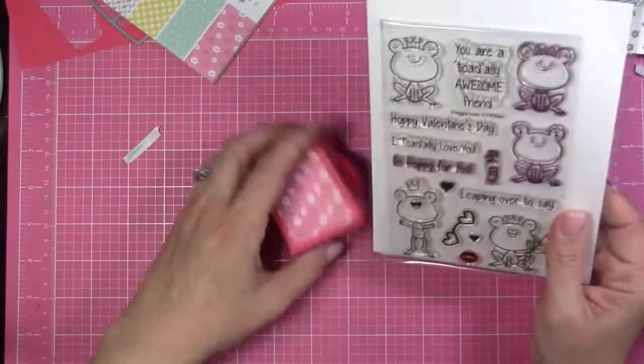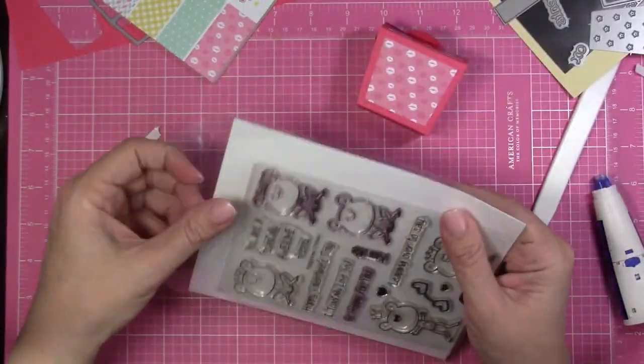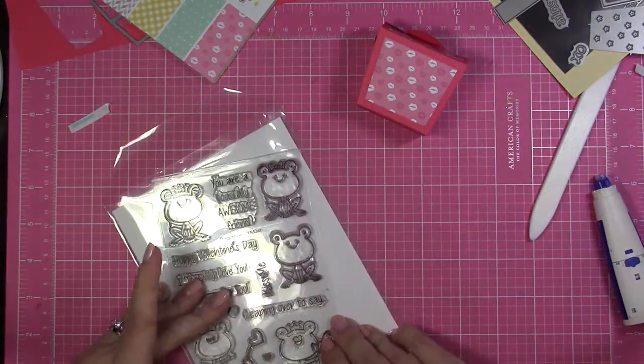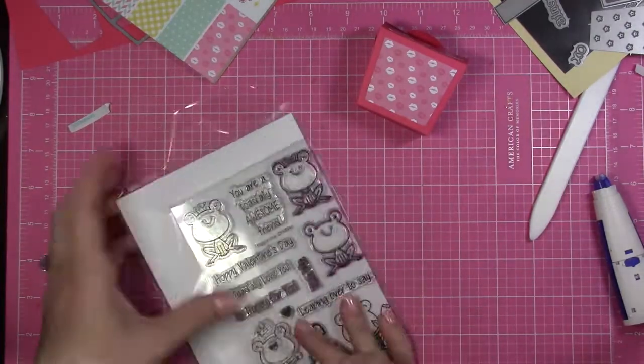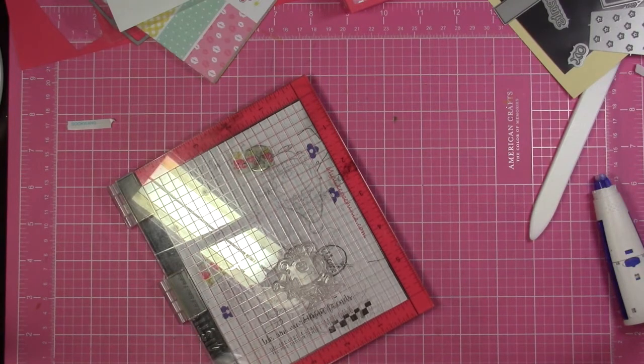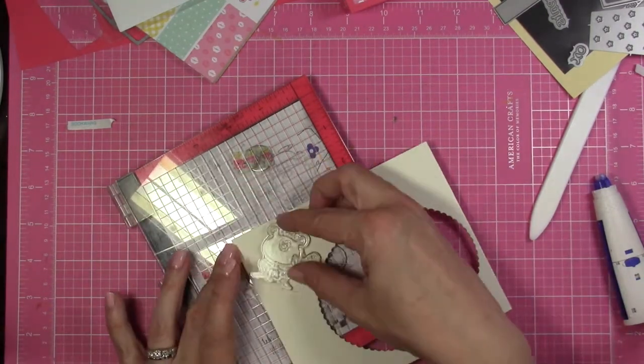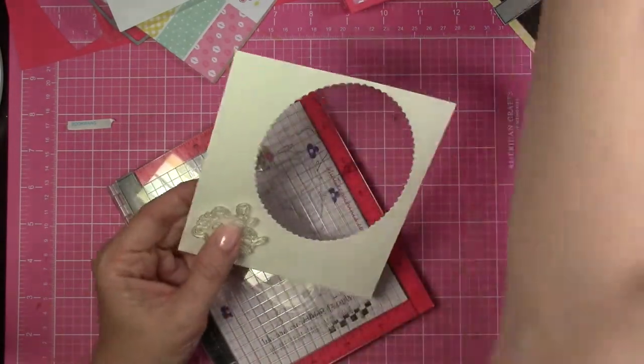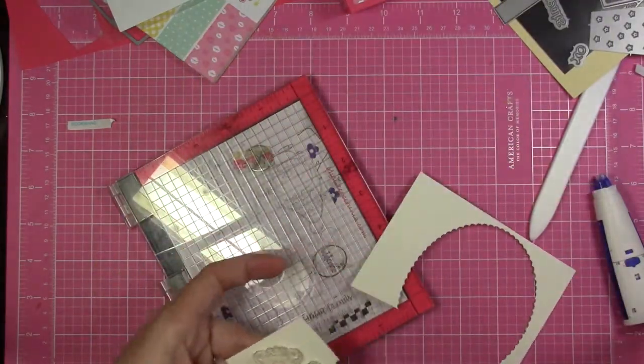And then I'm going to be using the Froggy Love stamp set to kind of add a little decoration to my box. I'm just picking one of the images here. And I'm going to grab a piece of scrap watercolor paper that's laying on my desk, and I'm just going to stick that into my mini MISTI, and I'm going to stamp the frog image.